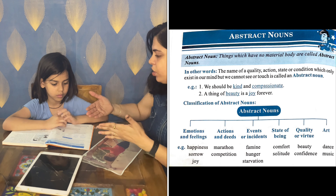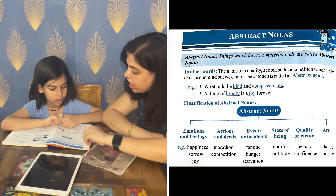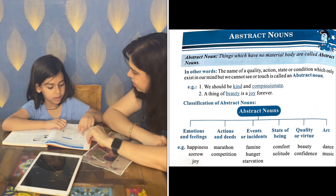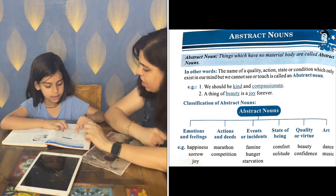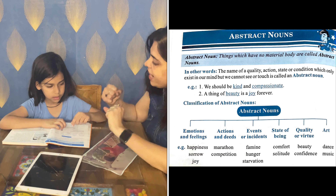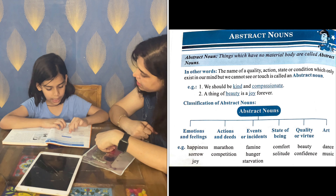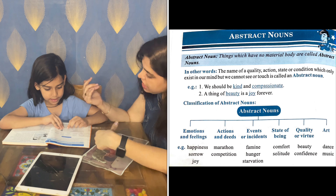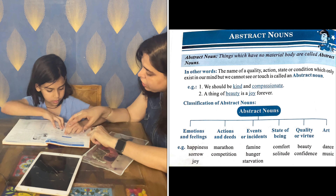Abstract nouns have different kinds. First: emotions and feelings. Second: actions and deeds. Third: events or incidents. Let's look at examples of each.